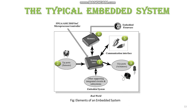The next important element is a communication interface. This is very important for communicating with various subsystems of the embedded system with the external world. The communication interfaces may be used for onboard communication like I2C, SPI, UART, and panel bus interfaces, or for external communication, i.e. wireless interfaces like infrared, Bluetooth, and Wi-Fi.